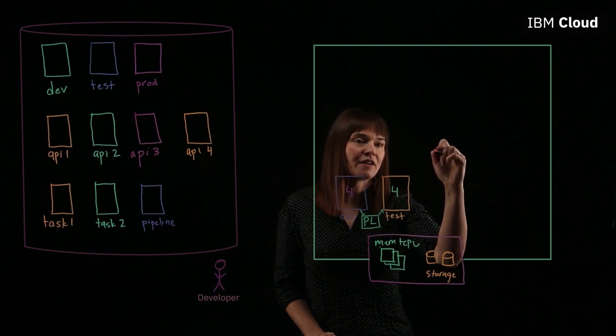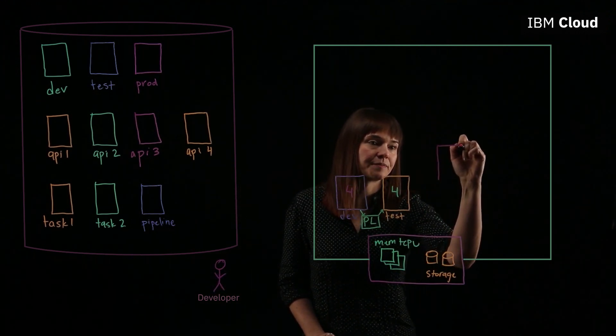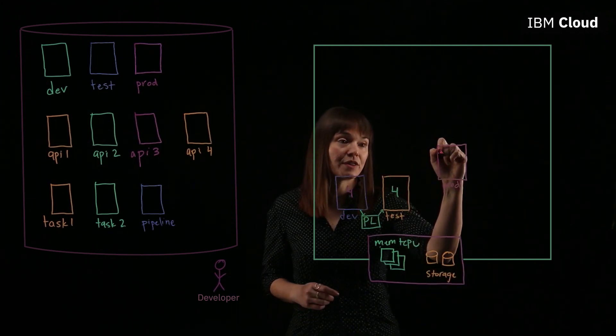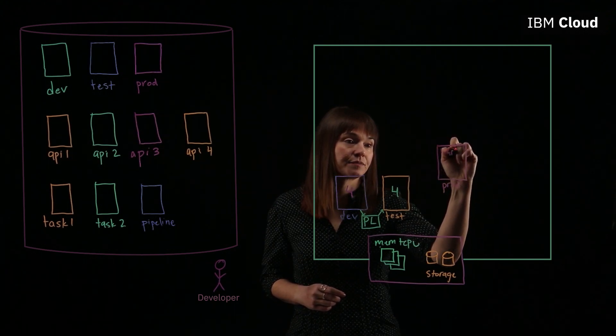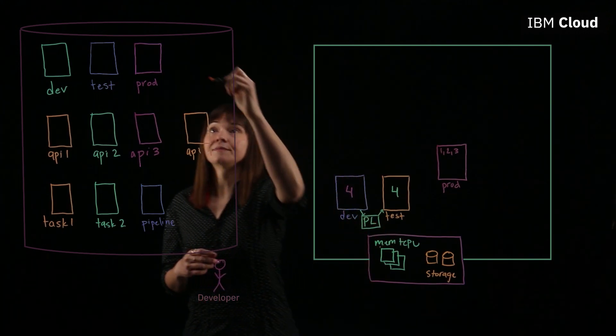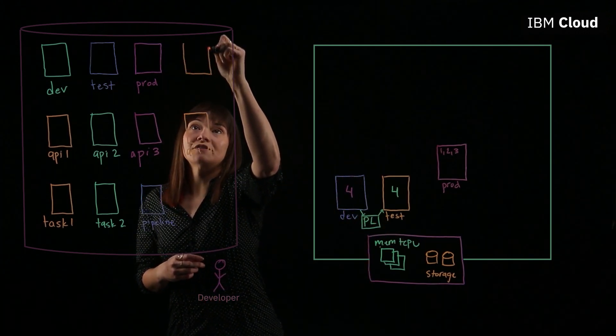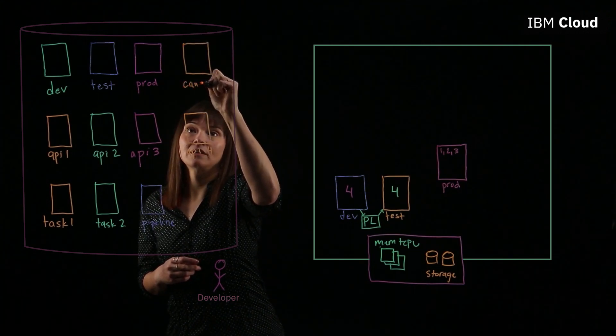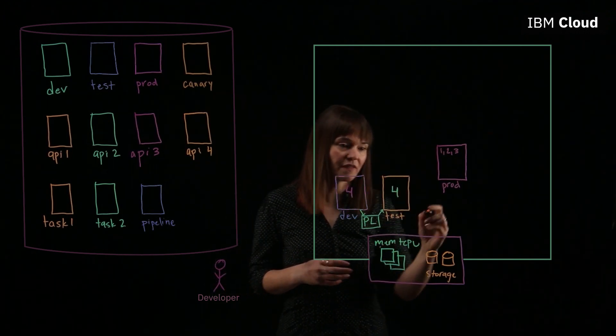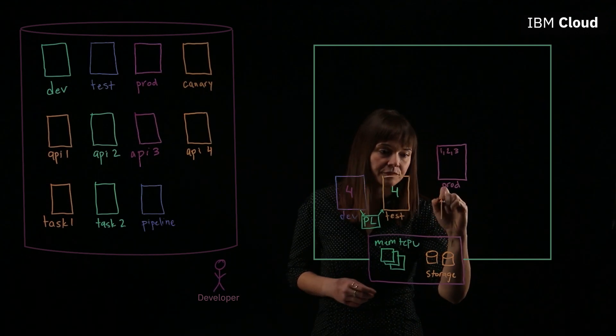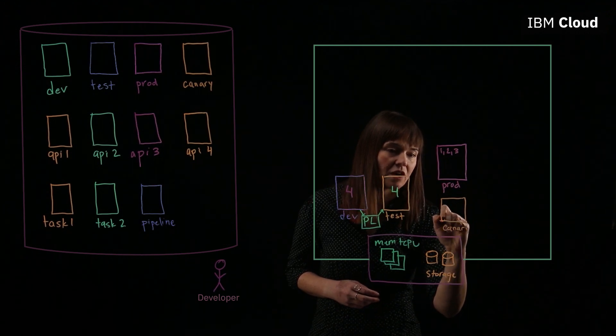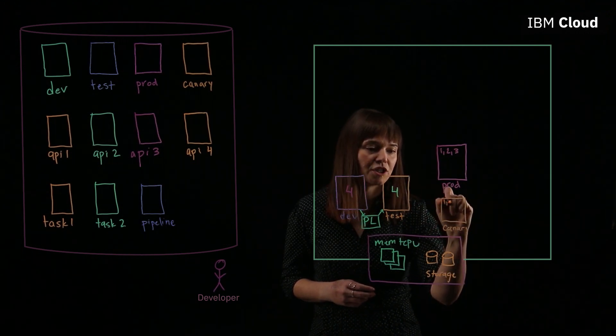So let's say we have our production environment built in our cluster, and that production environment already has our APIs 1, 2, and 3 in it. What we can do is also build a canary environment. So we'll define our canary environment in our repo, and we want our canary environment to be an exact replica of our production environment. So our canary environment also has APIs 1, 2, and 3 already running.